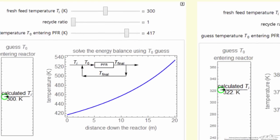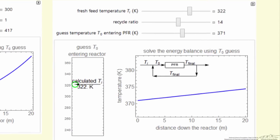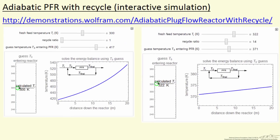If we have a higher recycle ratio, notice there's not much change in the reactor. Now the T0 value is much lower, we're approaching more like a CSTR. The temperature increases only from 371 to about 374 Kelvin, whereas on the left, temperature increases almost 120 degrees.